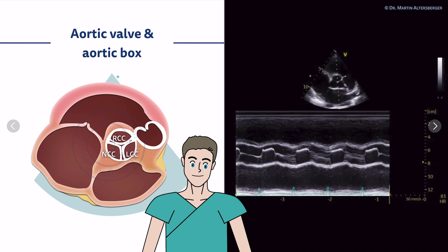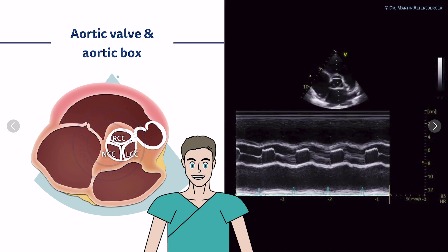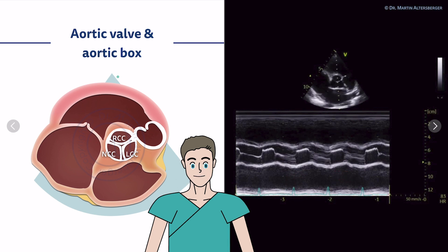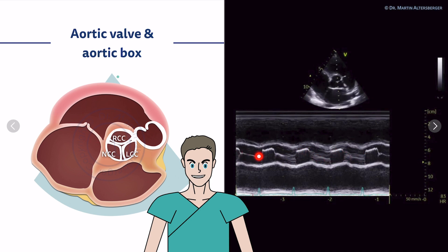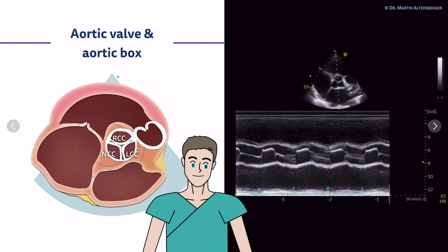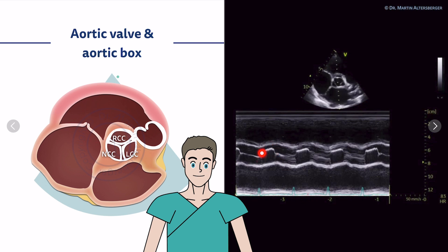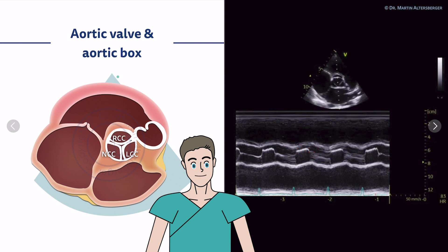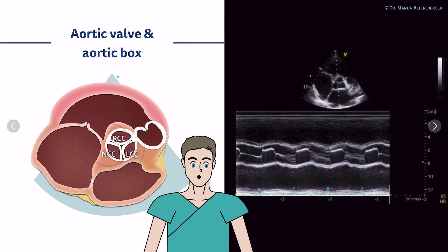Starting with an M-mode evaluation of the aortic valve, we can use the M-mode to create the so-called aortic box. The M-mode shows this scanned line over time, where we see the aortic valve, the left atrium, and the right ventricle. We can see the aortic valve closing and opening — that is the aortic box — which is used to assess whether the aortic valve is properly opening. Some fibrillation of the aortic valve is absolutely normal.